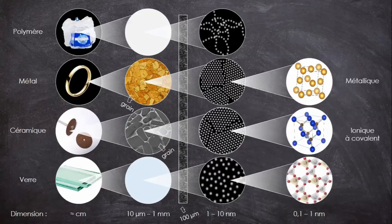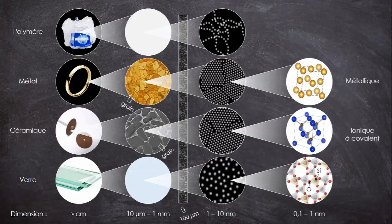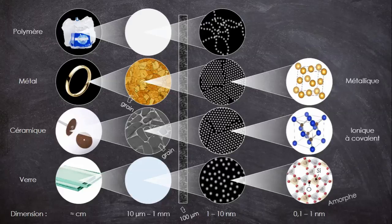Maintenant, étudions le verre. On va prendre le verre de silice pour simplifier. S'il présente une structure ordonnée à très petite échelle, avec des tétraèdres d'oxygène au centre duquel on retrouve un atome de silicium, cette petite structure ne se répète pas de façon homogène, comme les mailles cristallines de l'or ou du carbure de silicium. On dit que la structure est amorphe, par opposition à la structure cristalline.